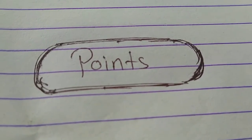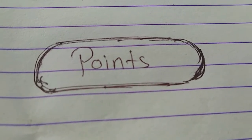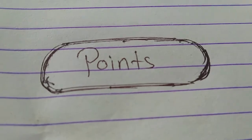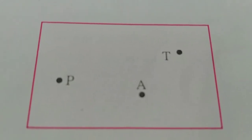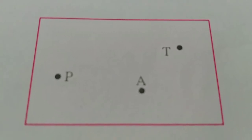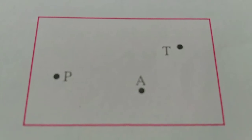In basic concepts in geometry, we are going to study about points. Let's learn. A point is shown by a tiny dot. We can use a pen or a sharp pencil to make the dot.